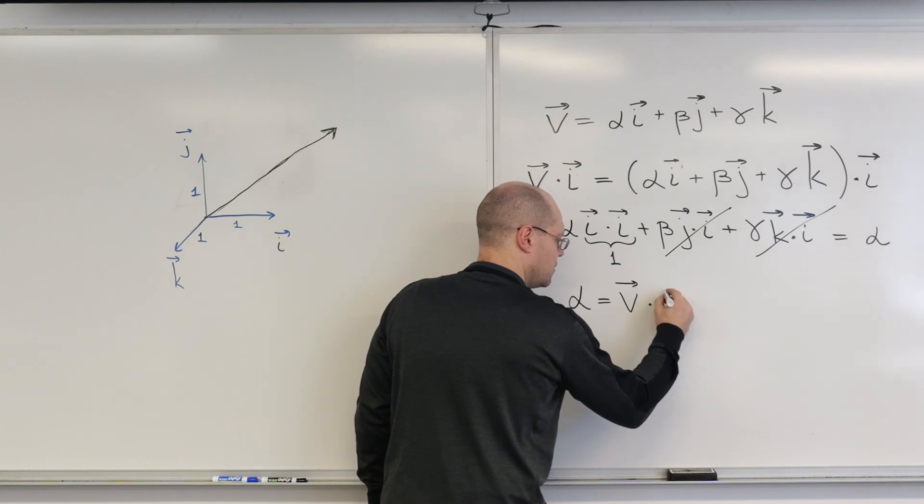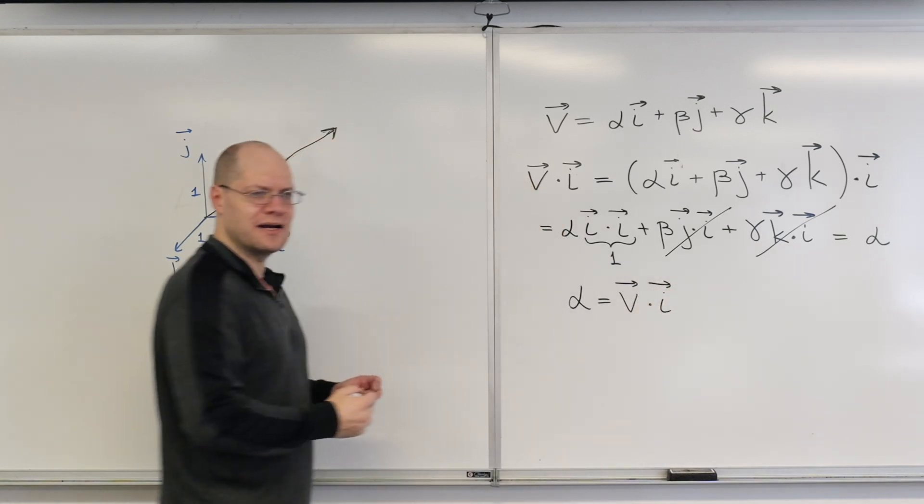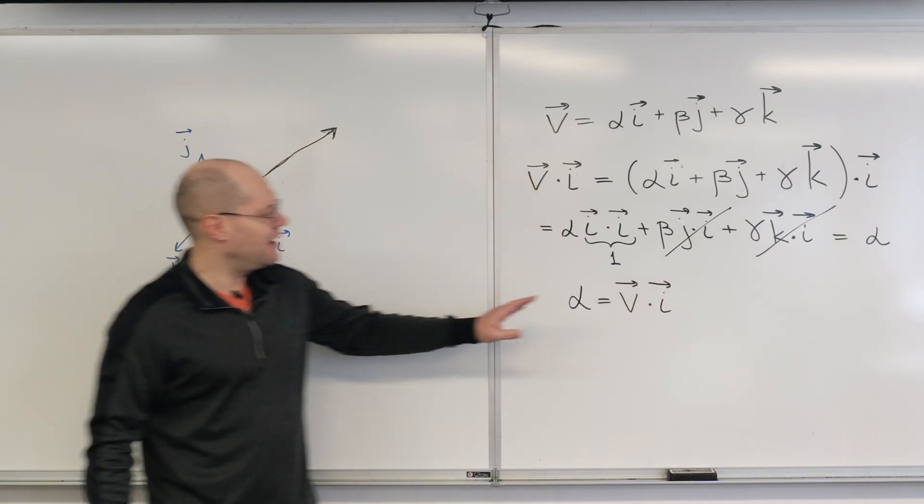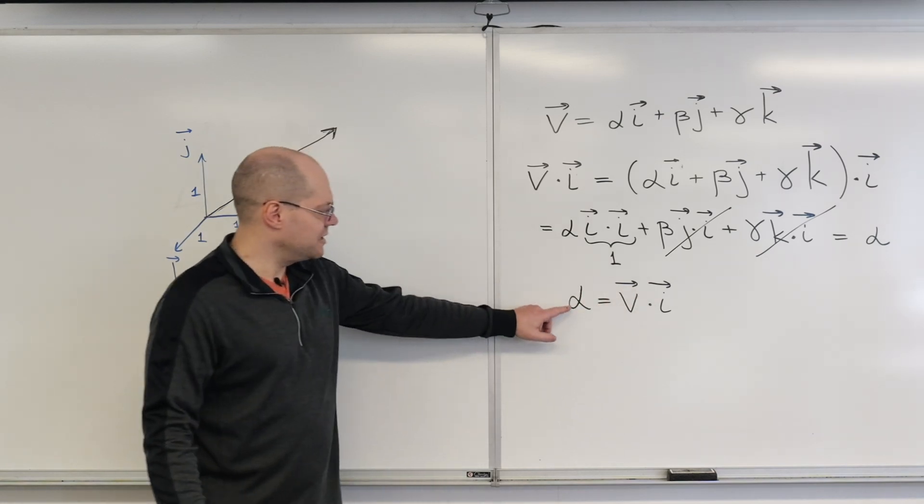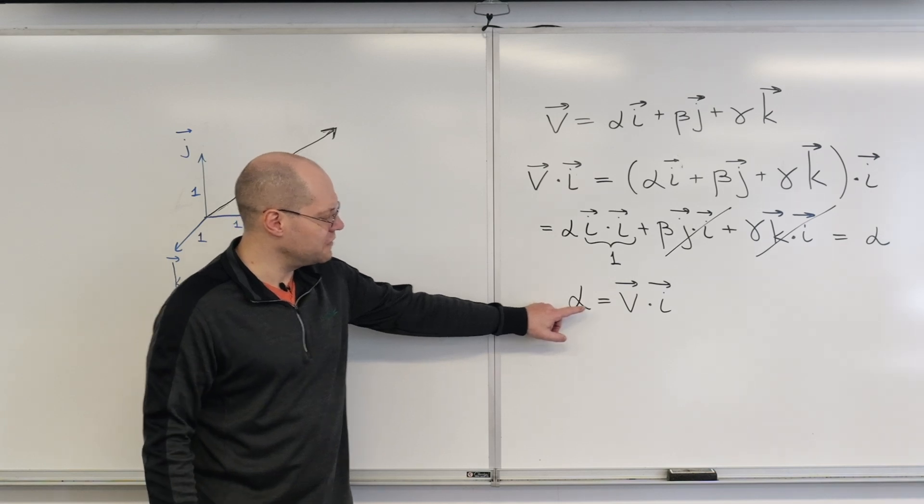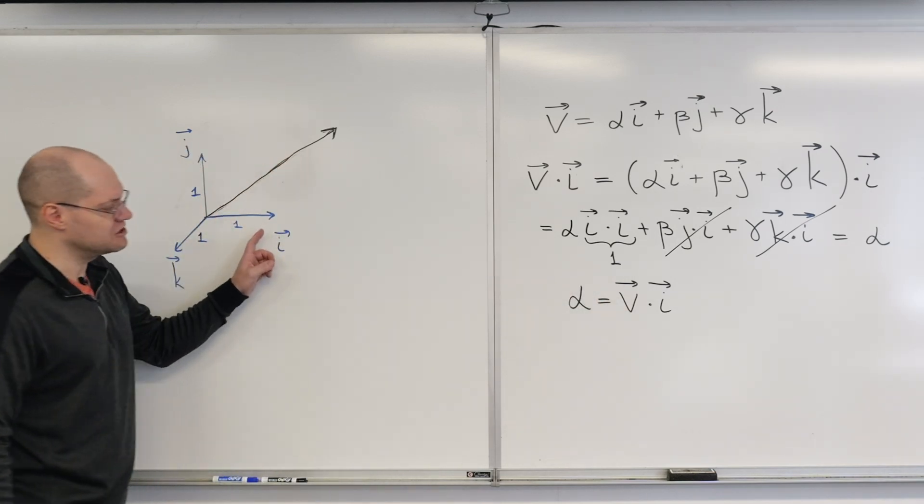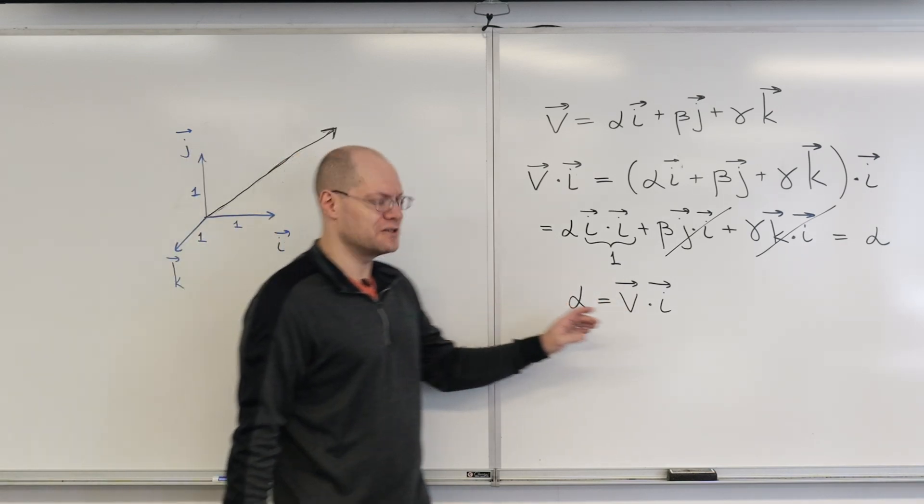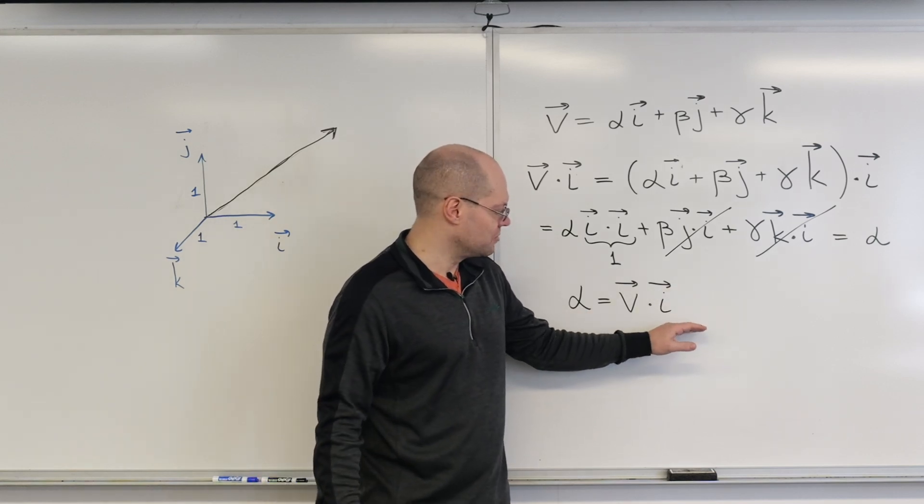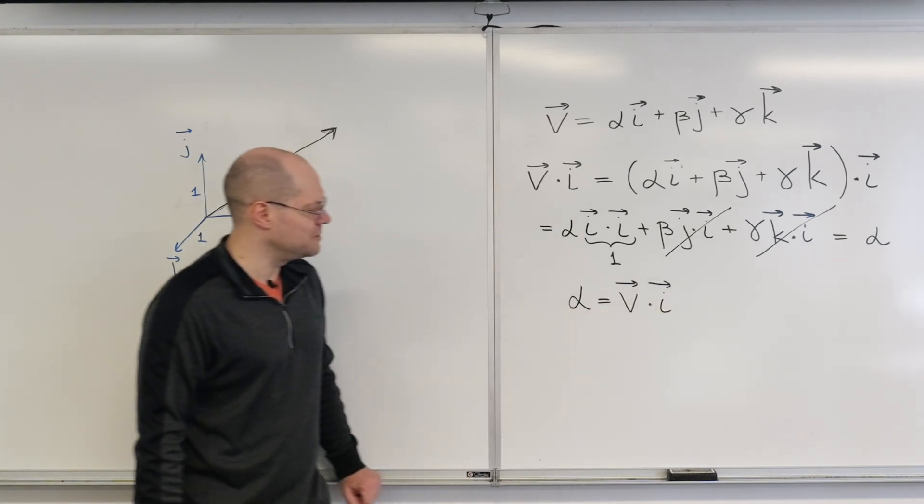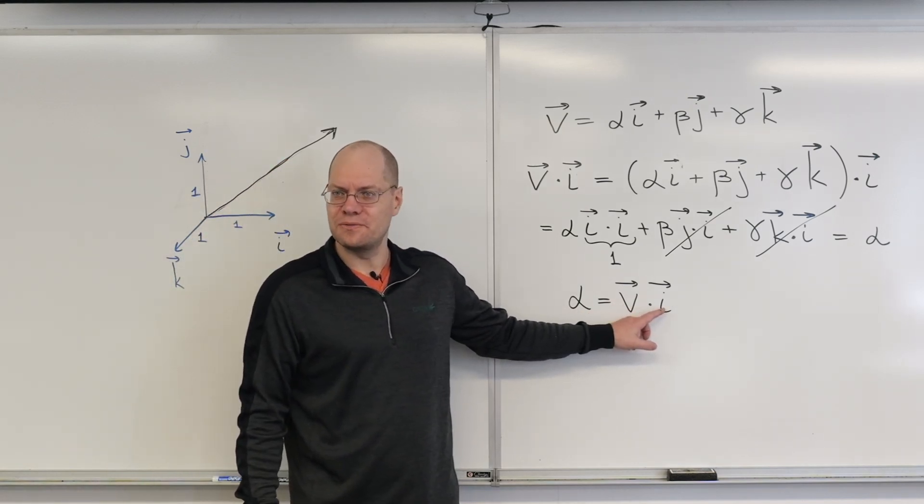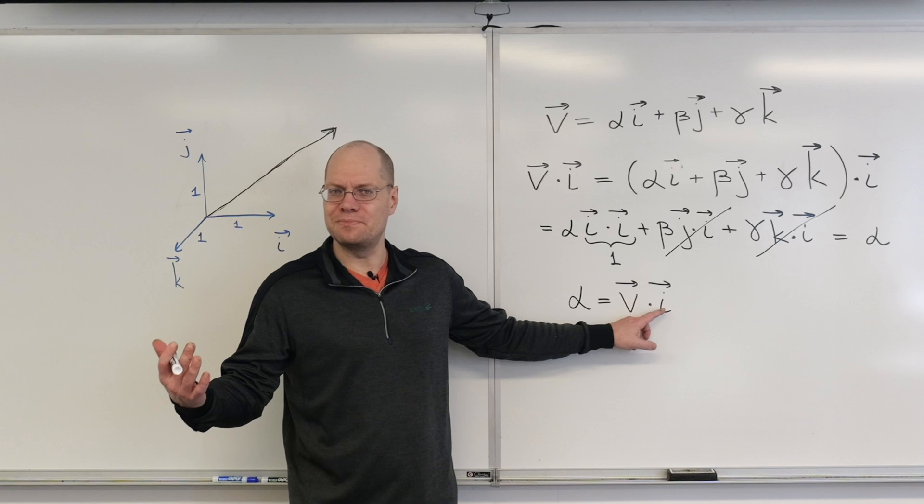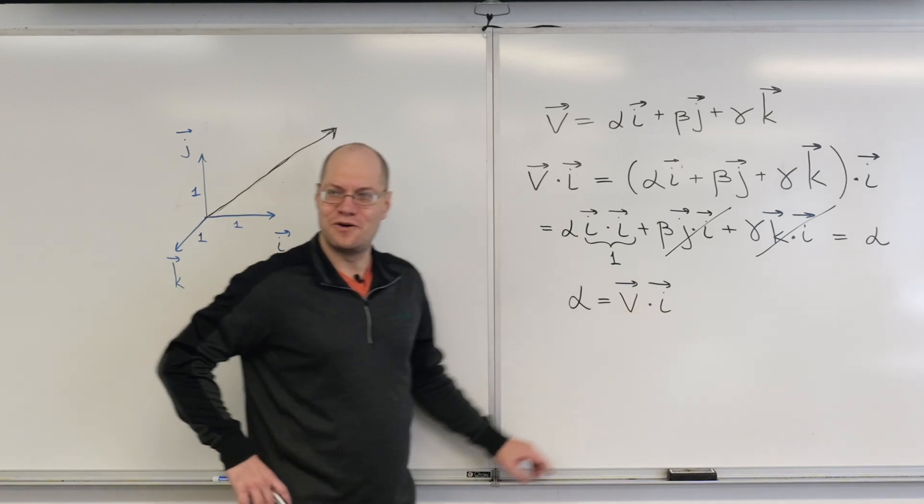So let me summarize everything that we can glean from this. Number one: to get a coefficient, to get the coefficient of a vector with respect to a Cartesian orthonormal basis, Cartesian slash orthonormal, the two terms mean the same thing, we just have to dot it with the corresponding vector of the basis. The simplest possible thing you can imagine involving the dot products.